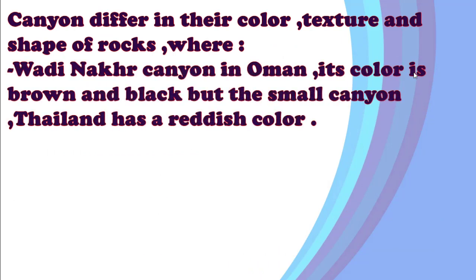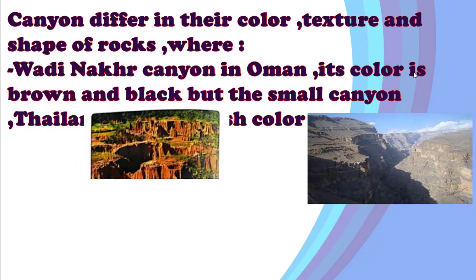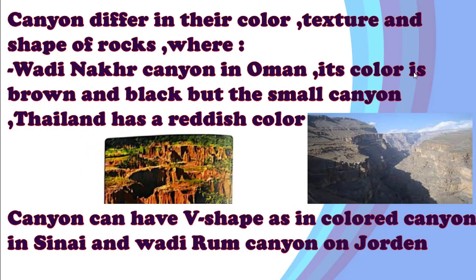Canyons differ in their color, texture, and shape of rocks. Wadi Nakhr canyon in Oman has a brown and black color, but the small canyon in Thailand has a reddish color. If you look at the picture of Wadi Nakhr in Oman, you will find the color of rocks is brown and black, while the canyon in Thailand has a different color.